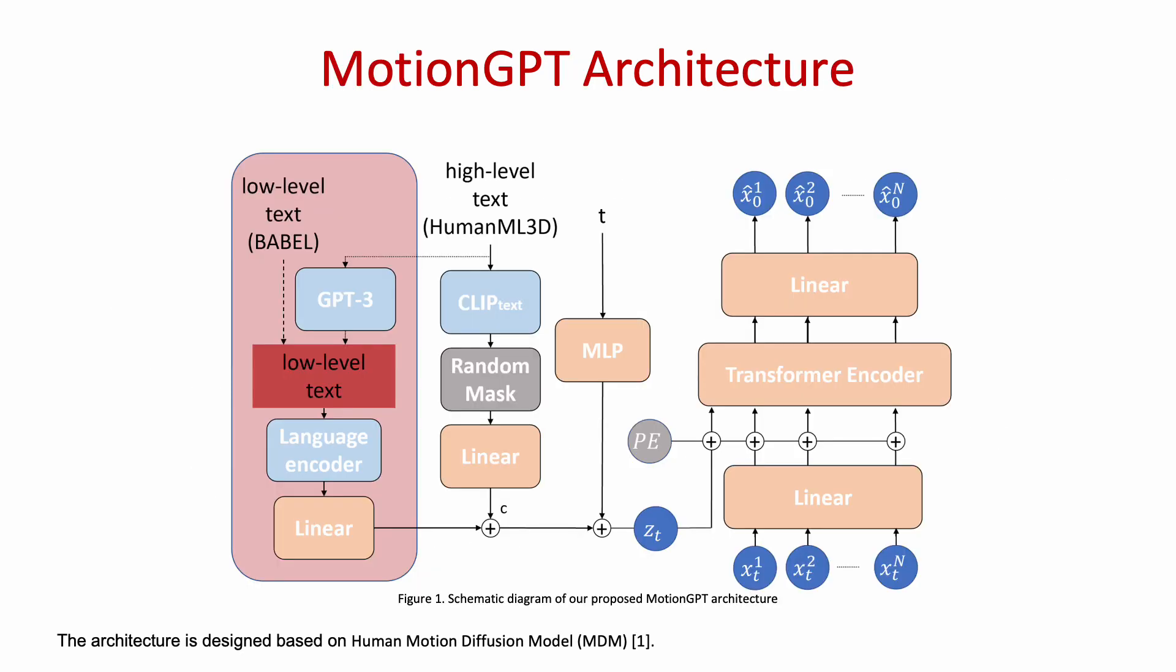As a diffusion model, our denoising network architecture is based on human motion diffusion model, MDM, and employs a transformer with four inputs: the training motion sample x, the encoding of the denoising step index t, the positional embedding of the temporal ordering of the motion frames, and the conditioning token c.